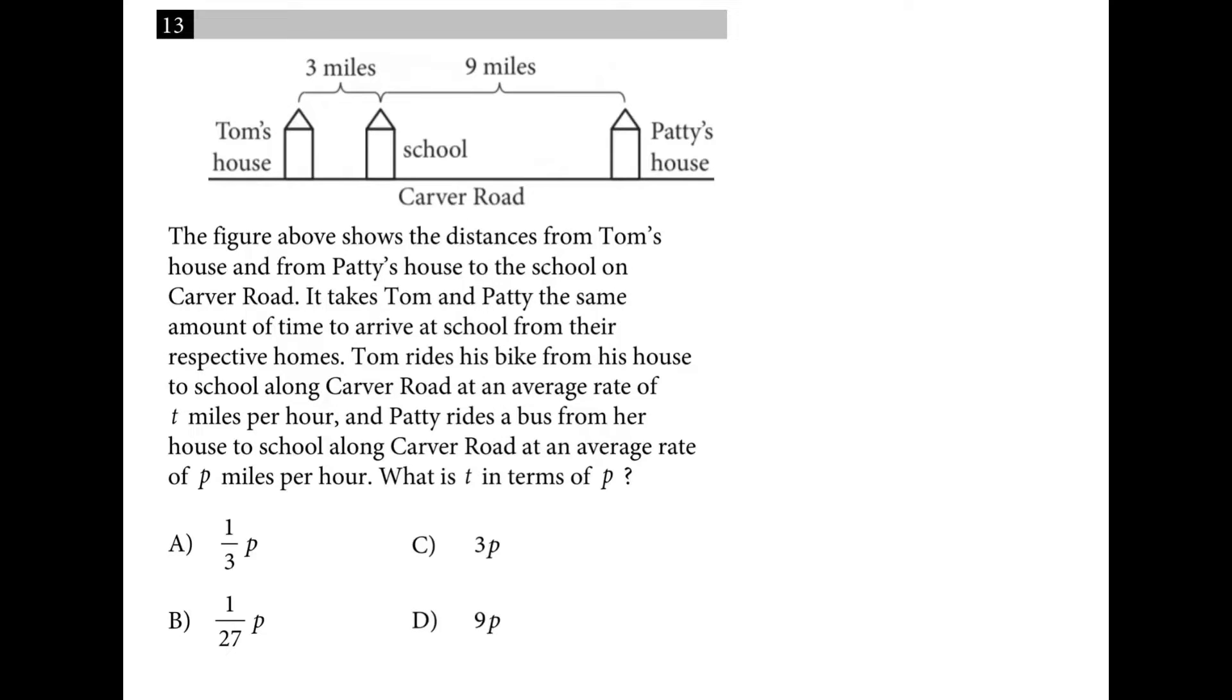So it takes Tom and Patty the same amount of time to get to school. Tom rides his bike and he rides three miles in some number amount of time. Tom travels three miles in the same amount of time it takes Patty to travel nine miles, bike versus bus. Since the time is the same, we know that Patty must be traveling three times as fast. So whatever Tom's speed was, miles per hour, we triple that and we get Patty's. They want to know T in terms of P. That means solve for T. So if I divide both sides by three, I get that T is equal to P over three, or one-third P.